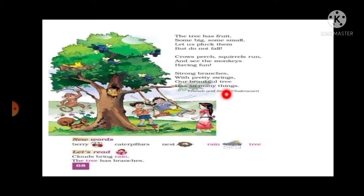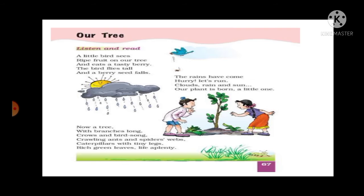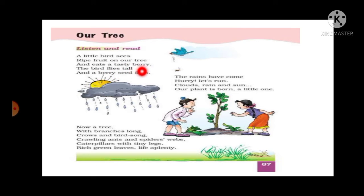This poem is written by Pranap and Smita Chakravarti. Let's see the first stanza: 'A little bird sees ripe fruit on our tree.' What does this little bird see? He sees the ripe fruit on the tree. 'And eats a tasty berry.' Underline this word — berry. Berry is a small juicy fruit.